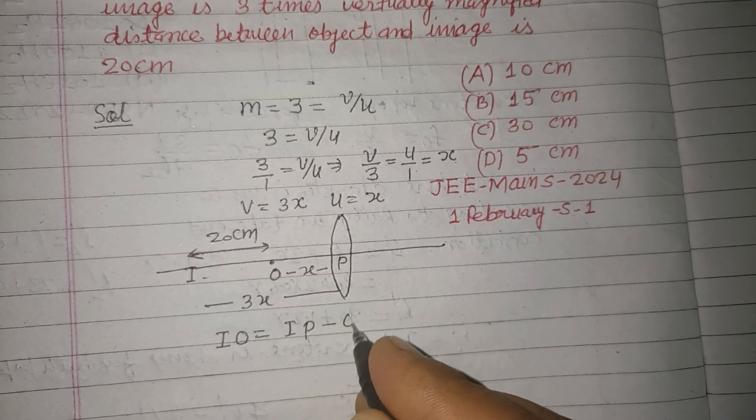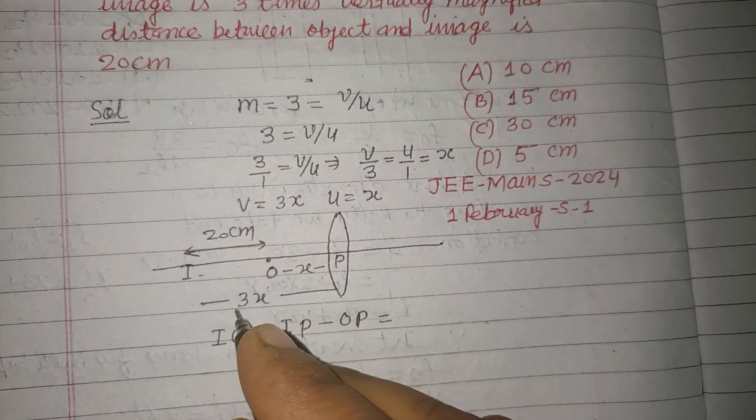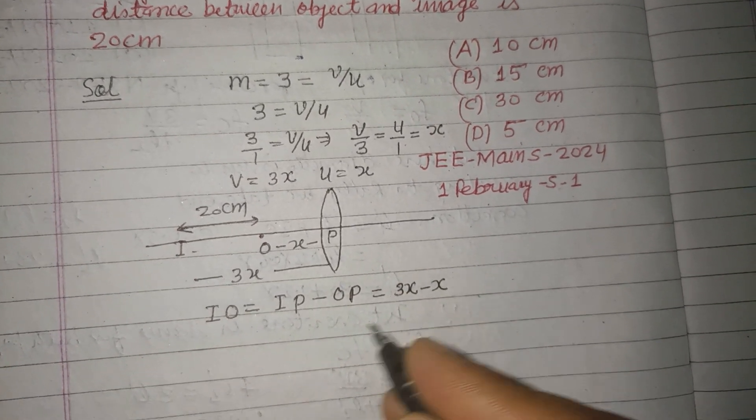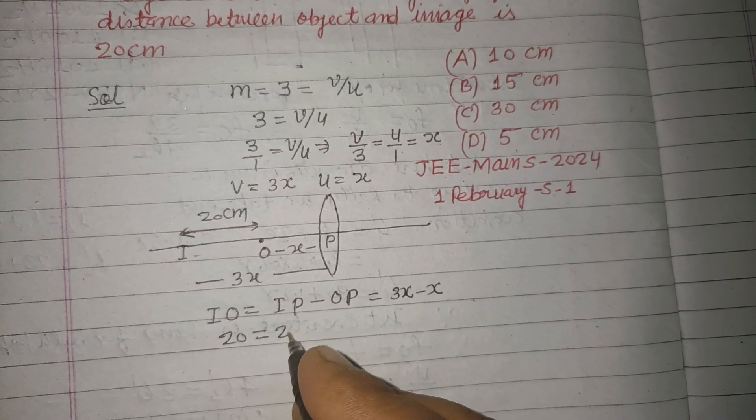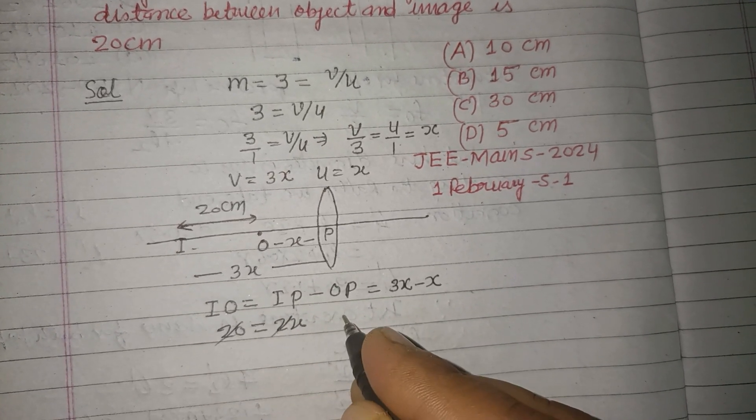IP is 3x and OP is x, so this is 20 centimeters. This gives 2x equals 20, so x is 10 centimeters.